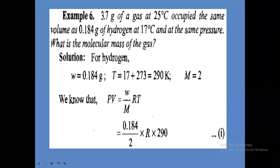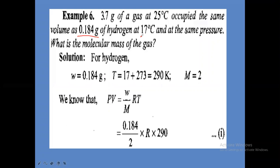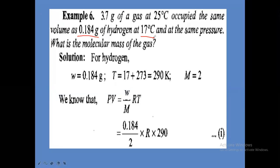We have to calculate the molecular mass of the unknown gas. Using PV = nRT, where n (number of moles) equals given weight divided by gram molecular weight. In numerical problems, we must convert centigrade temperature into Kelvin. So 17 plus 273 gives 290 Kelvin for hydrogen.